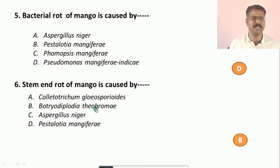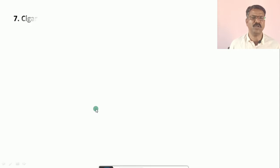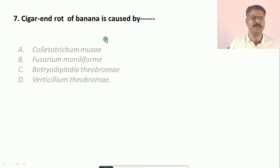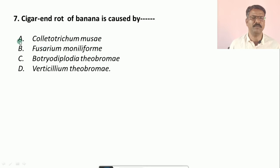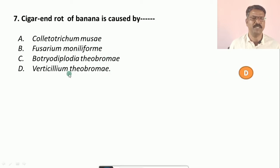Question number seven: Cigar end rot of banana is caused by — pathogens are: a) Colletotrichum gloeosporioides, b) Fusarium moniliforme, c) Botryodiplodia theobromae, d) Verticillium theobromae. The correct option is d, that is Verticillium theobromae, which causes cigar end rot of banana.